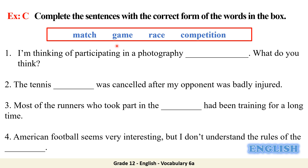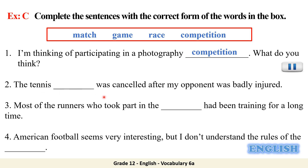Having read the definitions, complete the sentences with the correct form of those words. 'I'm thinking of participating in a photography...' — a photography match, game, race, or competition? Yes, a photography competition. 'The tennis was cancelled after my opponent was badly injured' — the tennis match. 'Most of the runners who took part in there had been training for a long time' — a race.